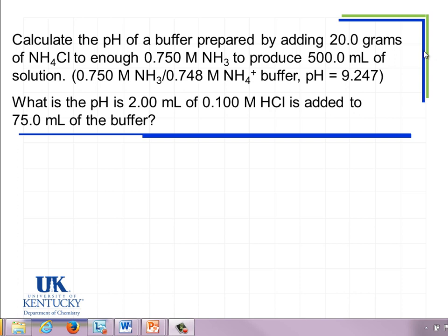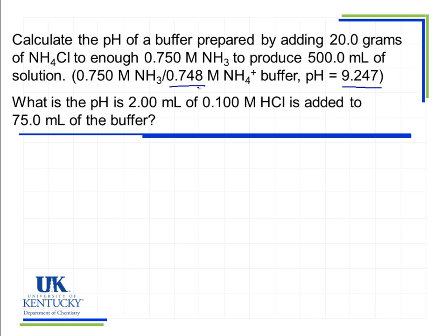We previously calculated the pH of the buffer described in this problem and determined it to be 9.247. The concentration of ammonia was given in the problem, and we determined the ammonium NH4+ concentration was 0.748 M.